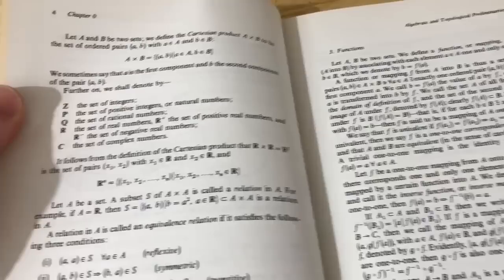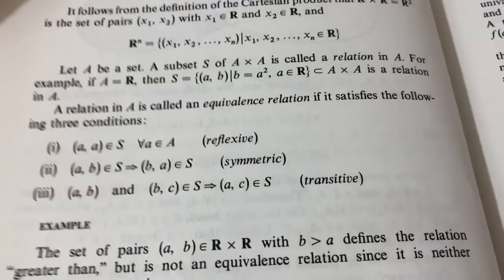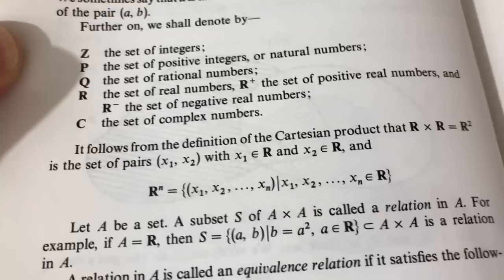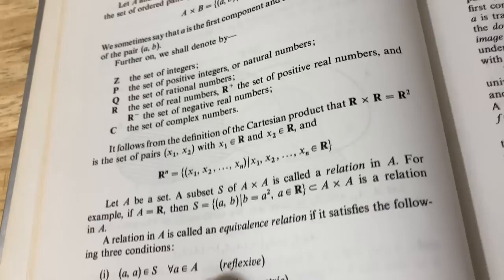Here it talks about a relation being an equivalence relation. So a relation is basically just a subset of a Cartesian product. Yeah, here it says, let a be a set, a subset s of a cross a is called a relation in a. So if a is a set, s is your relation. So it's just a subset of a Cartesian product. Cool.